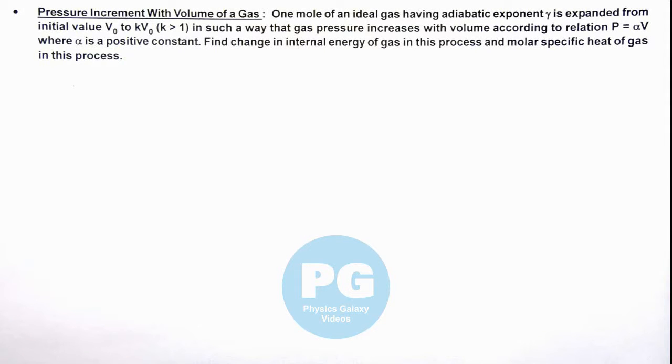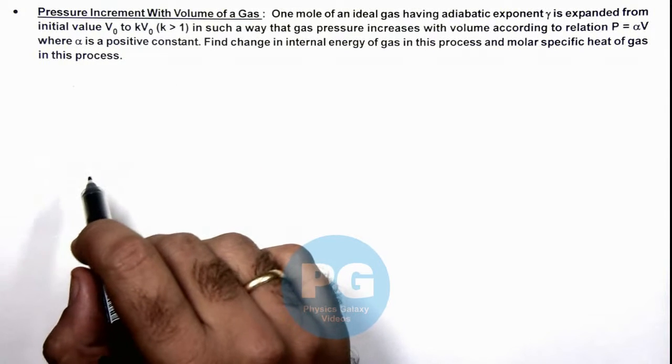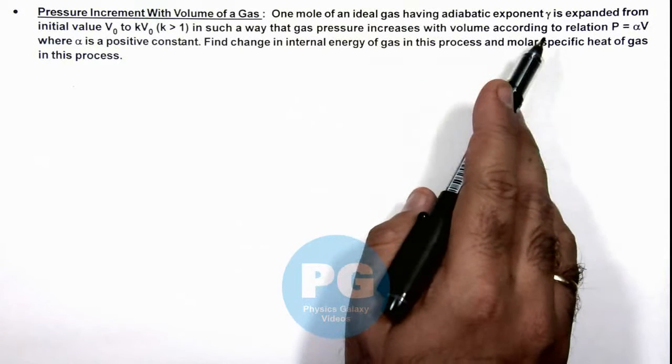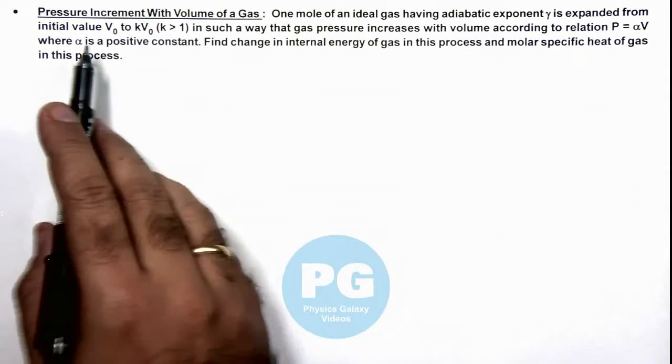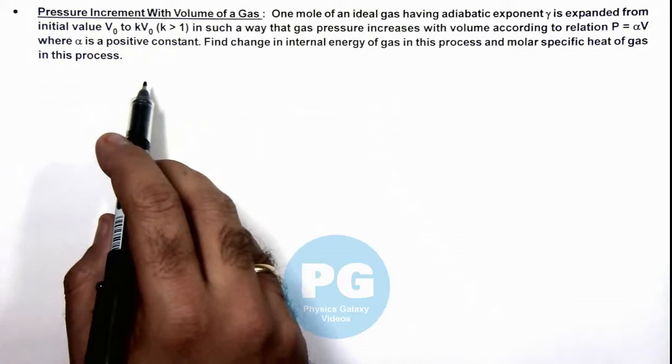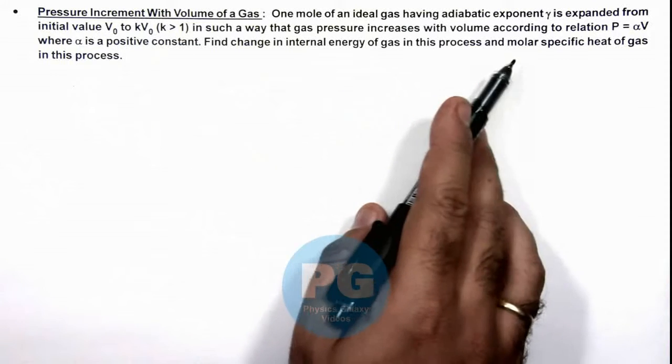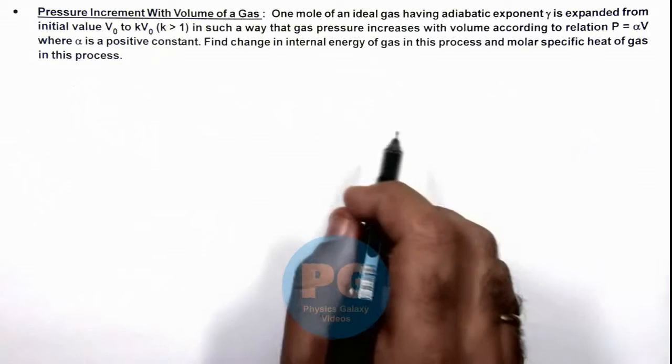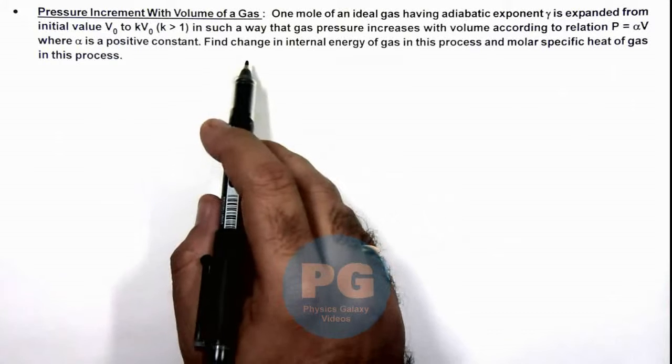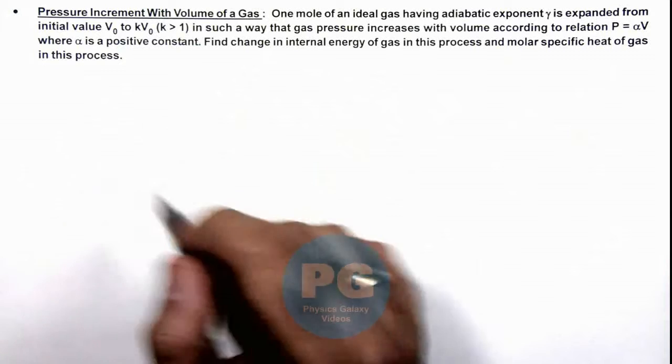In this illustration, we'll be studying about pressure increment with volume of a gas. We are given that one mole of an ideal gas having adiabatic exponent gamma is expanded from initial value V₀ to kV₀, where k is greater than 1, and in such a way that gas pressure increases with volume according to the relation P = αV, and here alpha is a positive constant. We are required to find the change in internal energy of gas in the process and molar specific heat of gas in this process.